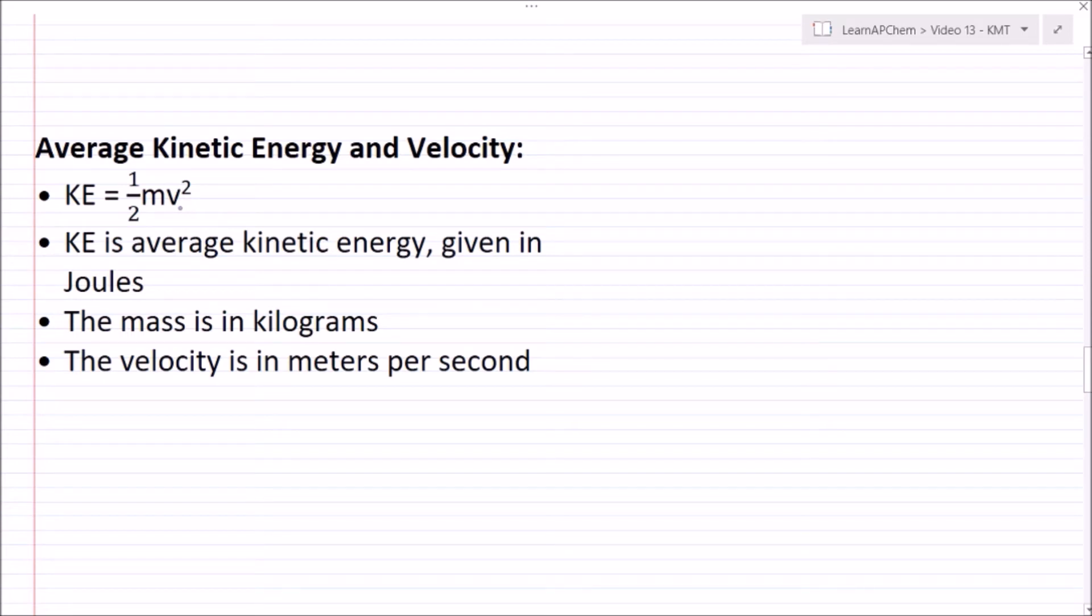Now note that KE and v squared here are both averages. These aren't describing the individual kinetic energy of atoms in a gas mixture but rather the average kinetic energy. Similarly for velocity, we're not describing the velocity of individual gas particles but rather the average velocity of the gas mixture.